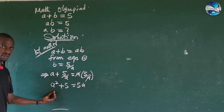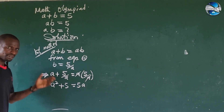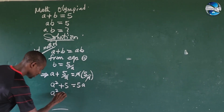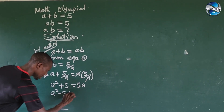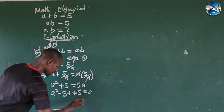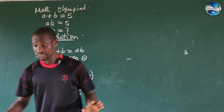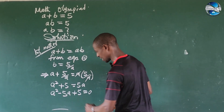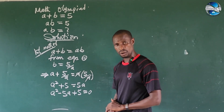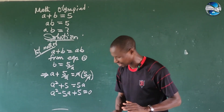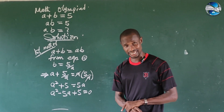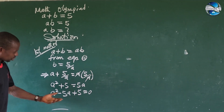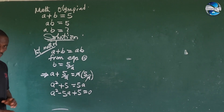Moving five a to the left side of the equation gives us a squared minus five a plus five equals zero. This is because five a carries a positive sign on the right side, so when it crosses to the left side it becomes minus five a. This is now a quadratic equation, so we solve it using the quadratic formula.